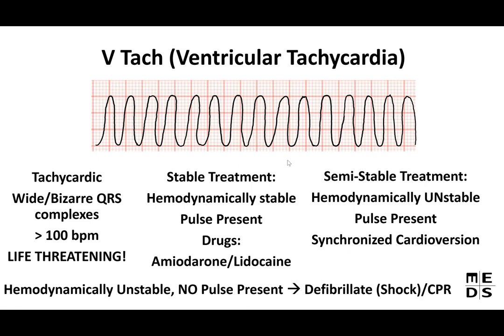For unstable VTach — no pulse and hemodynamically unstable — start CPR and use an AED. Attach pads, let it read the rhythm; if it identifies VTach with no pulse, deliver a shock — that's defibrillation. Also follow all ACLS and BLS steps.